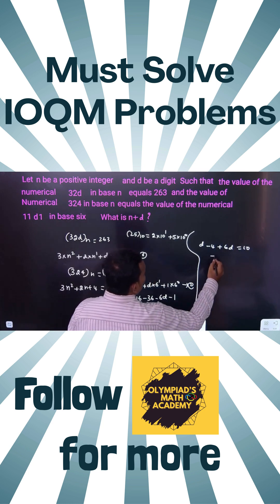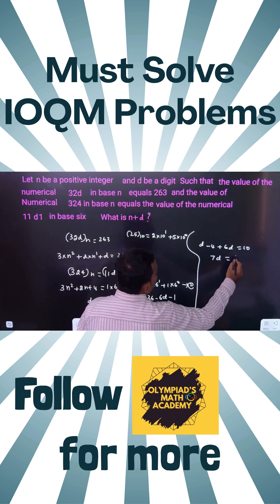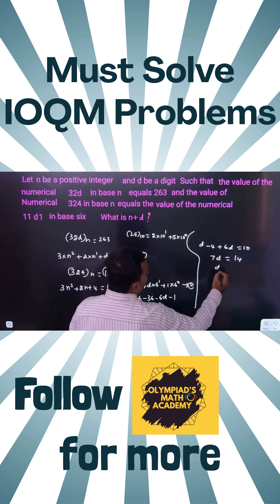So 7d equals 14, therefore d equals 2. How to find n here?